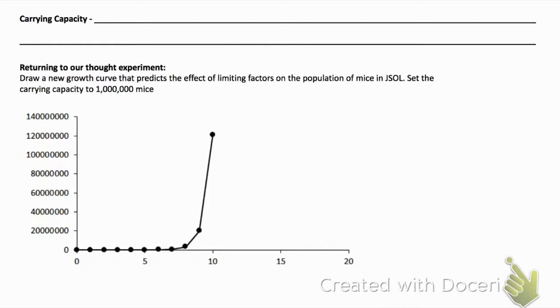All of those limiting factors will have an effect on the growth rate or how quickly a population can grow, but they also have an effect on the carrying capacity. More largely, the whole ecosystem actually has an effect on carrying capacity.